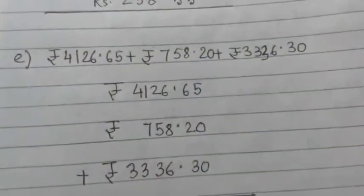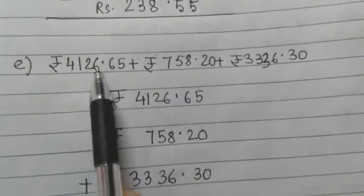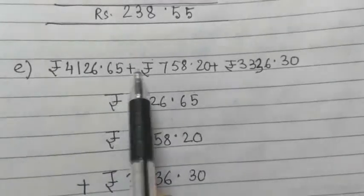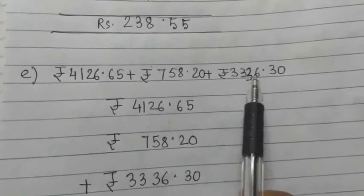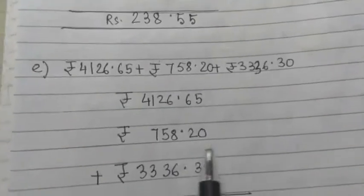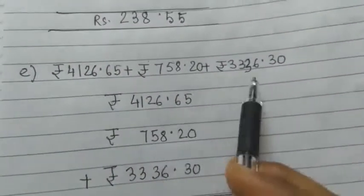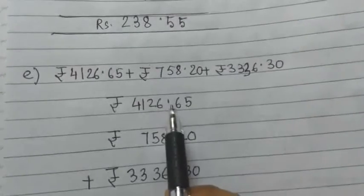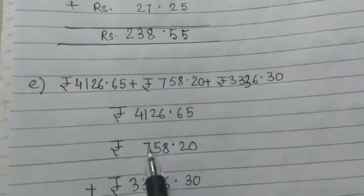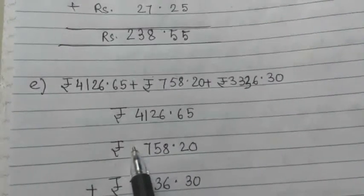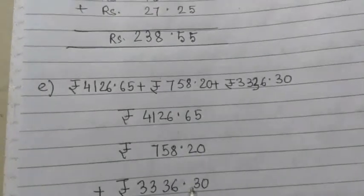Now come to e number. This is the sign for rupees. Rupees 4,126.65 paise, rupees 758 rupees 20 paise, plus rupees 3,336 rupees 30 paise. So here also you can go accordingly. 4,126.65 paise, 758 - you have to put the 7 in 100 place, don't write it in the thousands place - 20 paise, and 3,336 rupees 30 paise.